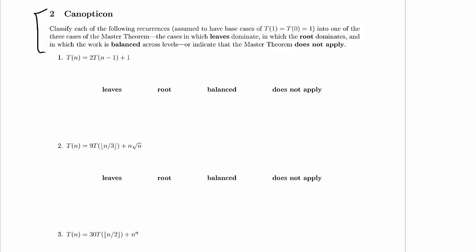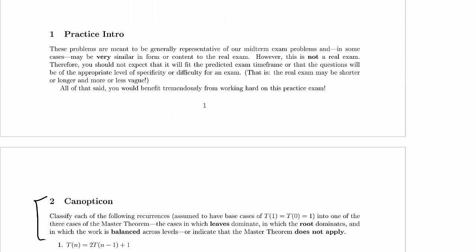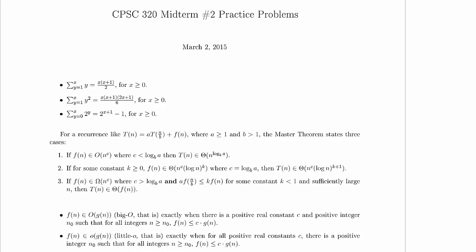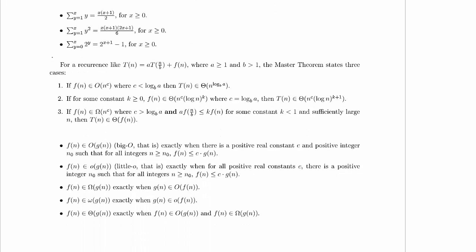So before we can dive into this problem, we should probably take a look at the master theorem. It is earlier in the document here, so I'm just going to jump back up and look at our summary of the master theorem. For recurrences like T(n) equals aT(n/b) plus f(n), where a is greater than or equal to 1 and b is greater than 1, the master theorem states three cases.